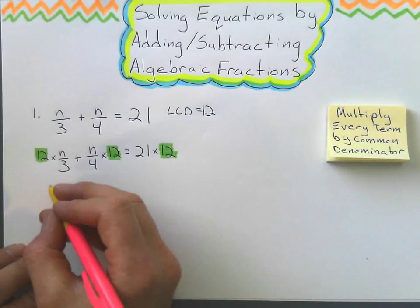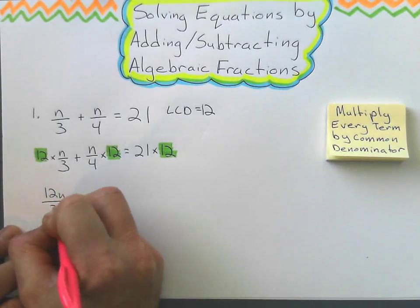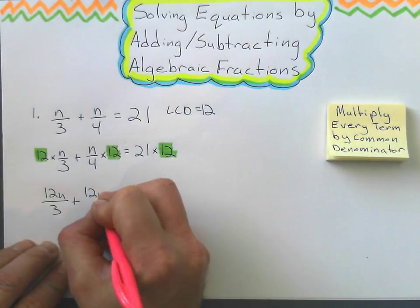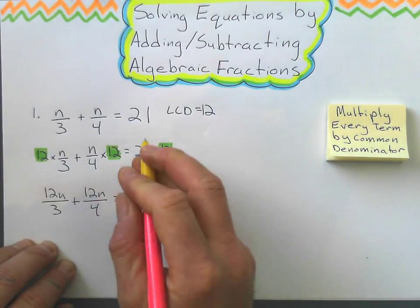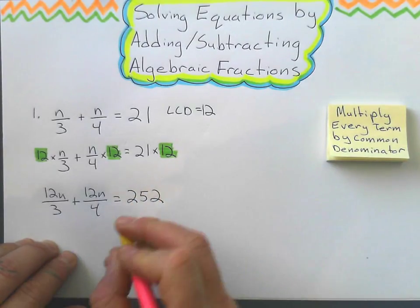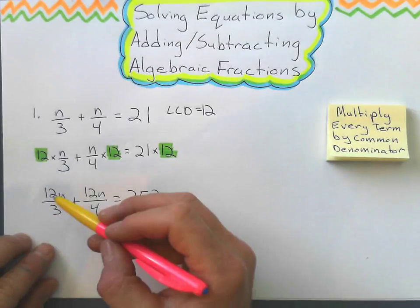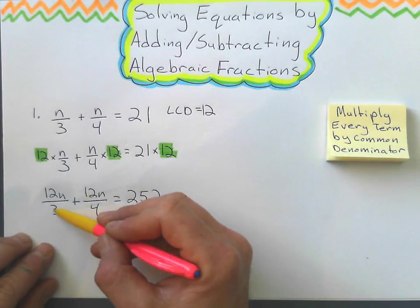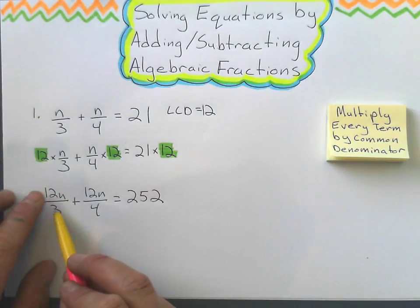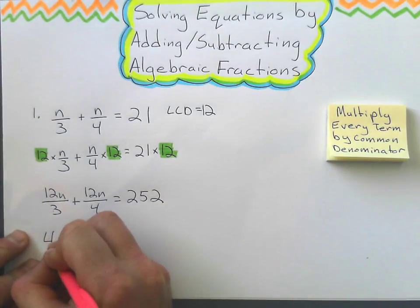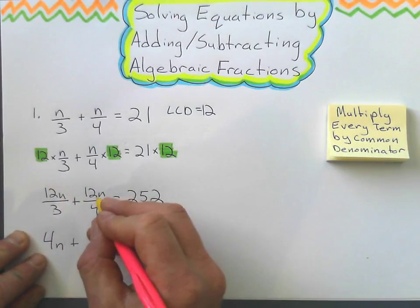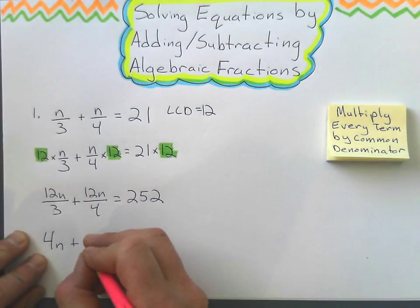Okay, and when I simplify this, I get 12n over 3 plus, this is 12n over 4. And 21 times 12 gives me 252. Now why you do that is all of these guys, 12 over 3 and 12 over 4, should eliminate the fractions, which is the whole point of doing it. 12n, 12 divided by 3 gives me 4n, and 12n divided by 4 gives me 3n.